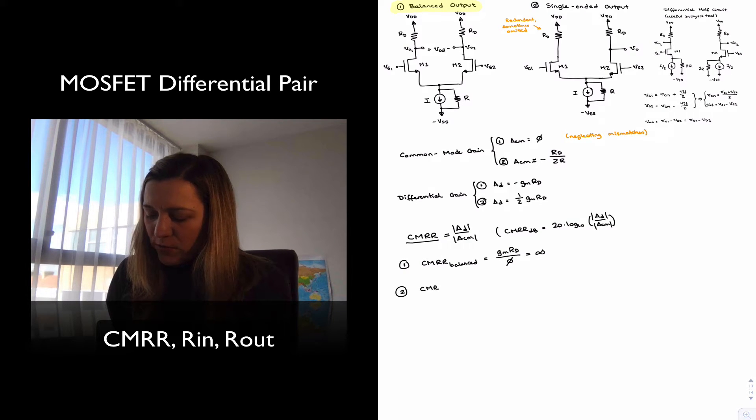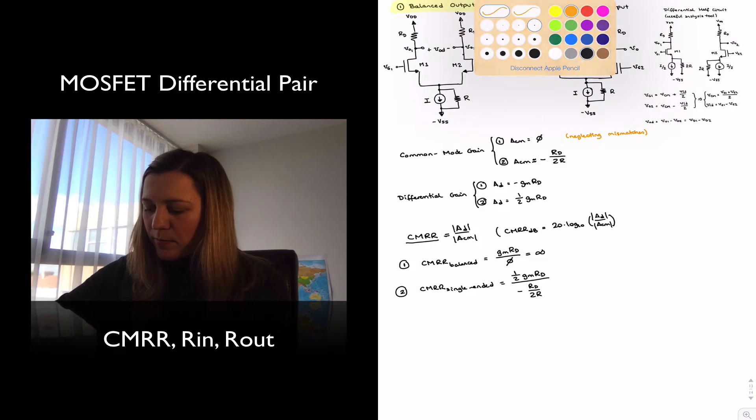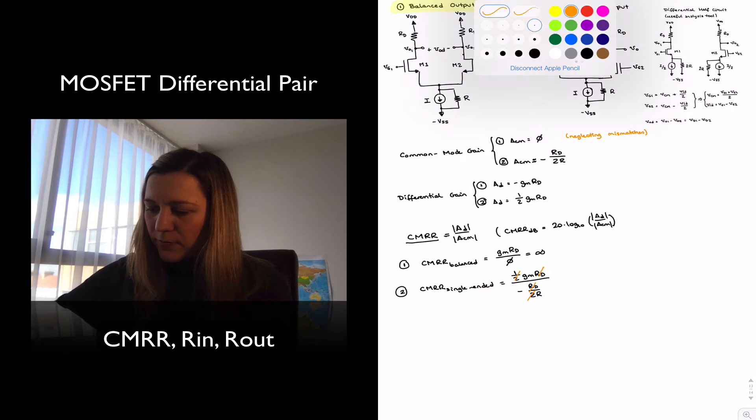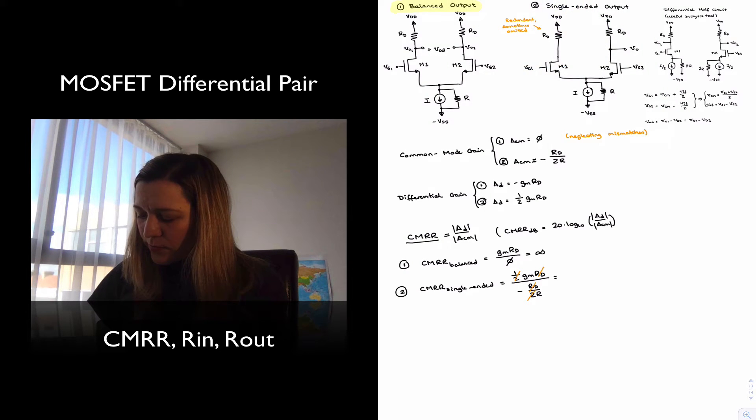In the case of the single-ended circuit, we have one-half of GM times RD for the differential gain, divided by negative RD over 2R for the common mode gain. The RDs cancel out, one-halves cancel out, and so we are left with GM times R.